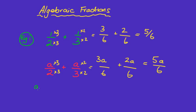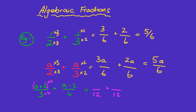You might have something that looks like this: (a + 2) over three plus (a − 2) over four. The same principle applies — because it's an addition question, the denominators need to be the same. So we use a common denominator of twelve, timing the first fraction's top and bottom by four, and the second's top and bottom by three.